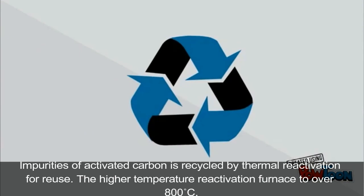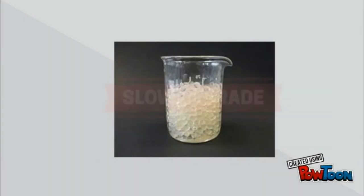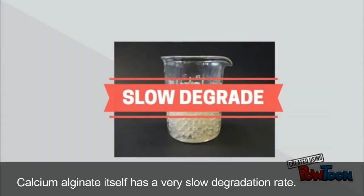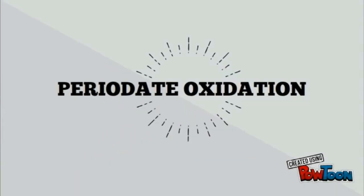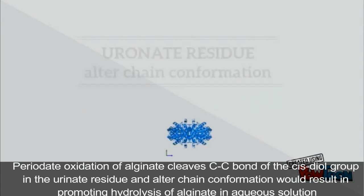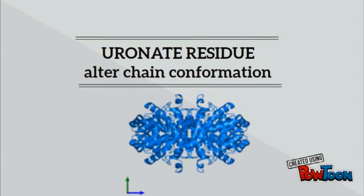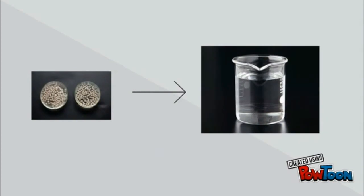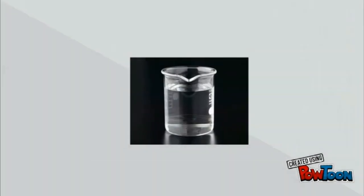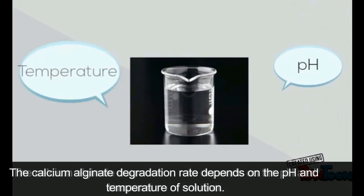Impurities of activated carbon are recycled by thermal reactivation for reuse. The higher temperature reactivation components to over 800 degrees Celsius. Calcium alginate itself has a very slow degradation rate. Periodate oxidation of alginate cleaves carbon-carbon bond of the cis-diol group in the urinate residue and alters chain conformation. This could result in promoting hydrolysis of alginate in aqueous solution. The calcium alginate degradation rate depends on the pH and temperature of solution.